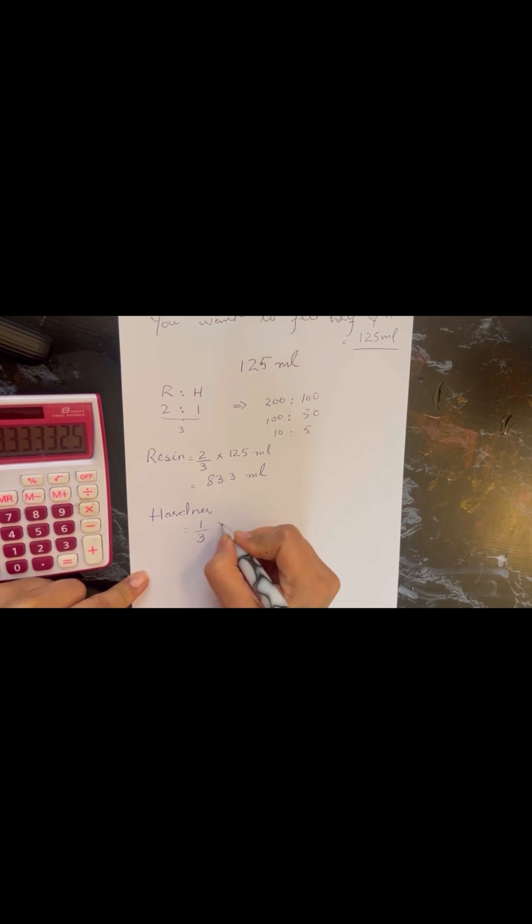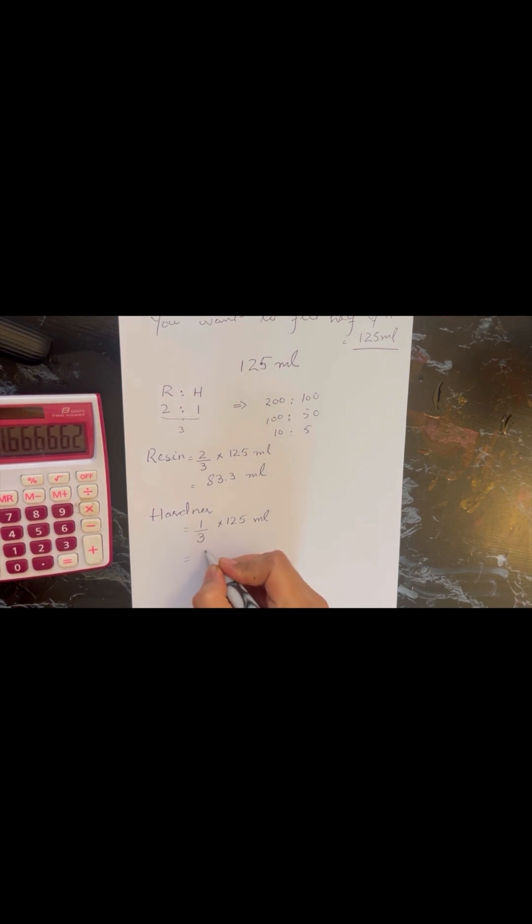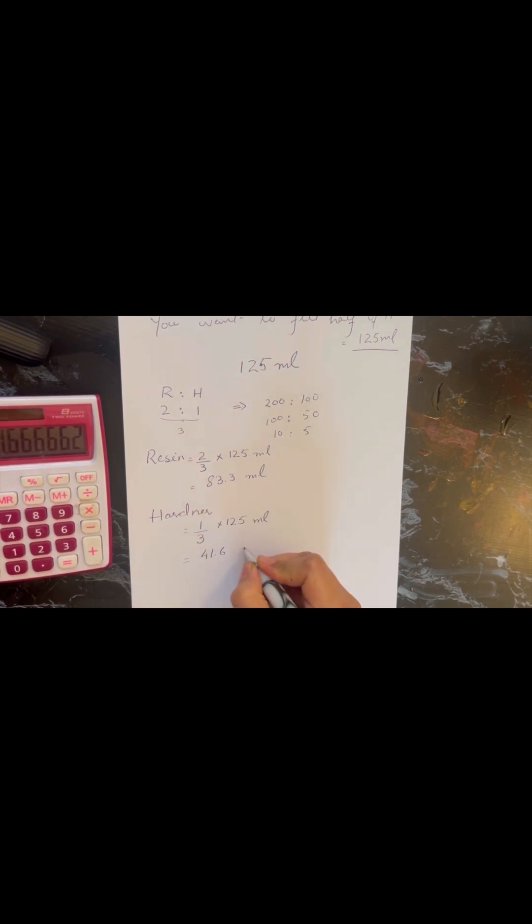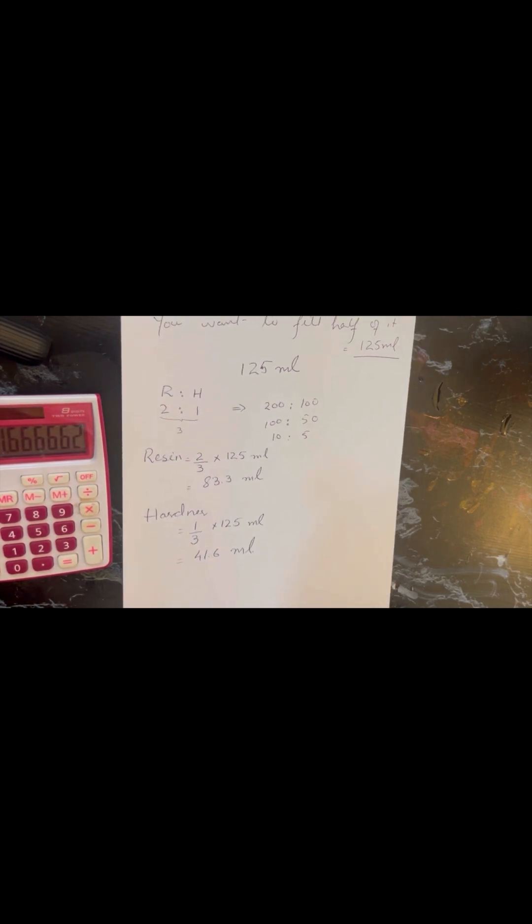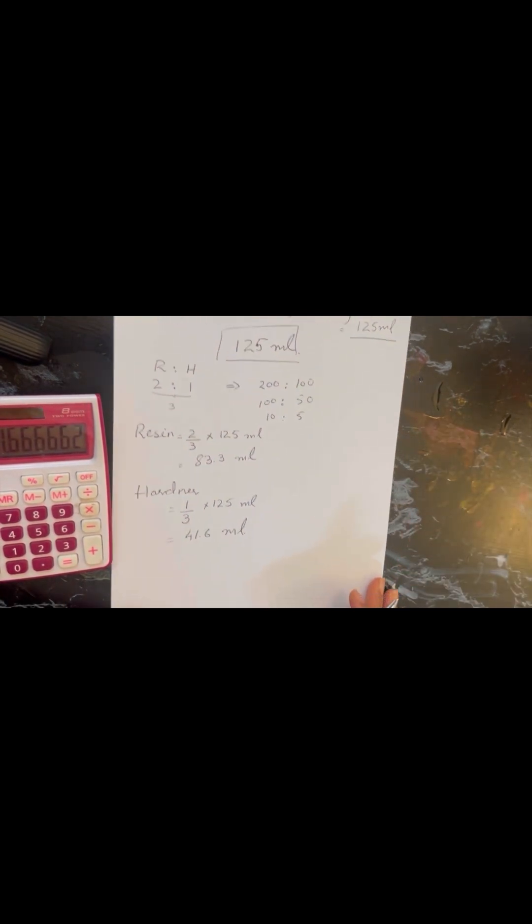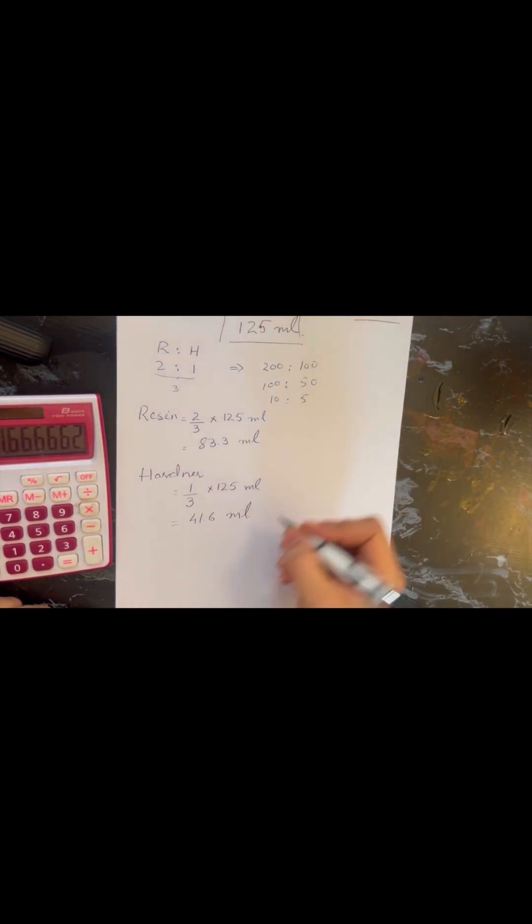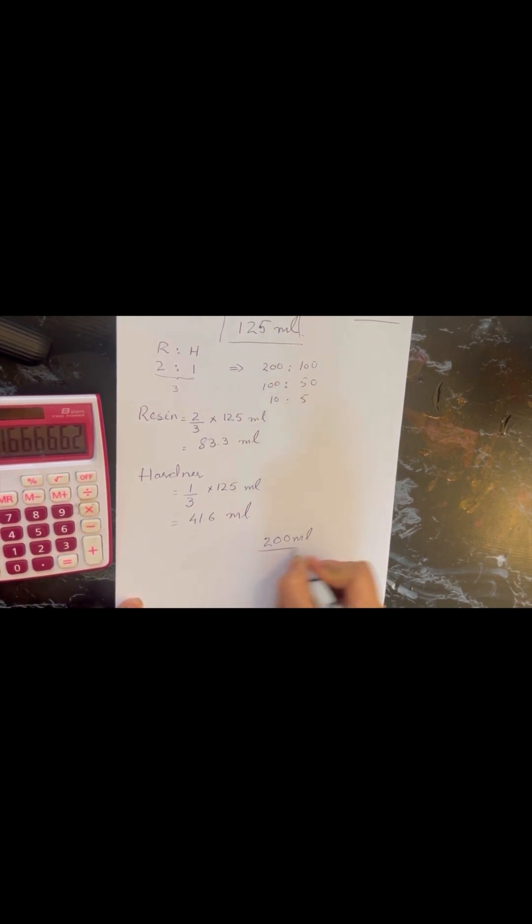Now for hardener I am going to do the same. It is 1 out of 3 because the total parts are 3 and hardener is 1 out of 3. So 1 out of 3 by 125 is 41.6 or you can also use 42 ml since you can't really measure the values in points on the digital scale sometimes, so you have to round it off.